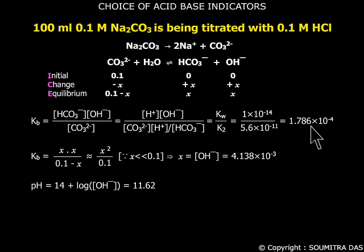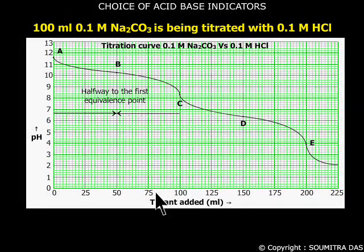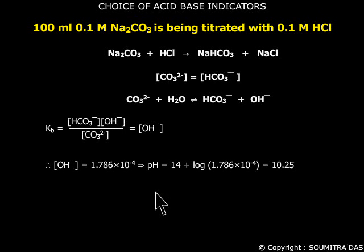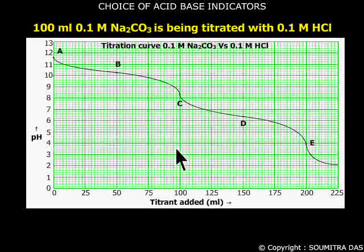The Kb value is Kw divided by K₂, which is equal to 1.786 × 10⁻⁴. The concentration of hydroxide ions is calculated to be 4.138 × 10⁻³, and the corresponding pH is calculated to be 11.62. At point B, which is halfway to the first equivalence point, the concentration of carbonate ions is equal to the concentration of bicarbonate ions, and the concentration of hydroxide ions becomes equal to Kb, which corresponds to a pH equal to 10.25.